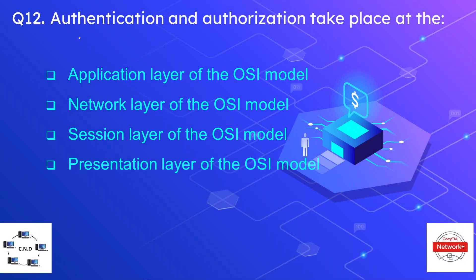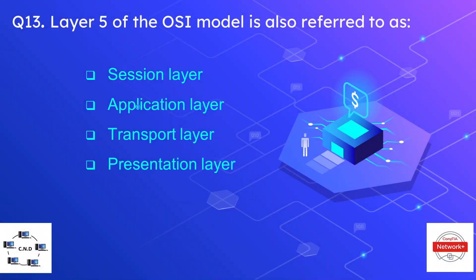Question number twelve is: authentication and authorization takes place at which layer? The options are application layer, network layer, session layer, or presentation layer of the OSI model. The correct answer is the session layer — authentication and authorization takes place at the session layer.